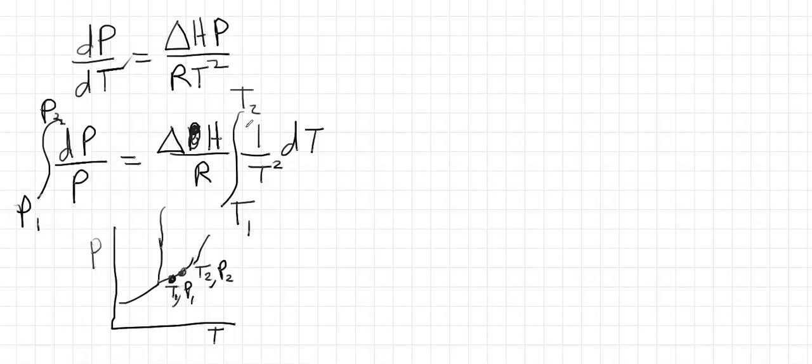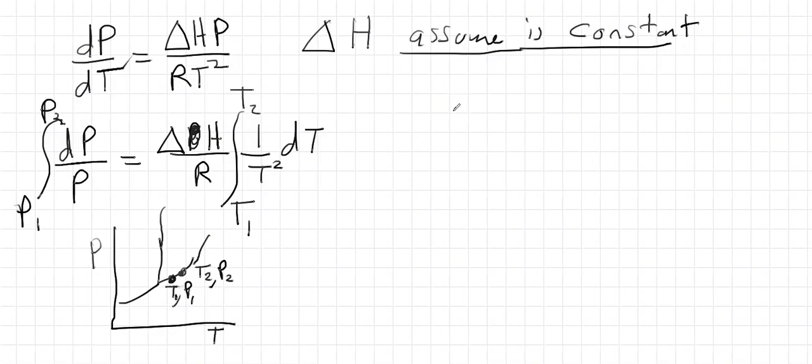Let's go ahead and do the integral. Notice that I've already taken the H out, so we've made an assumption here. Let's explicitly state that we're assuming delta H is constant. If we do this over a really big temperature range, that approximation is going to start to break down. We're assuming the gas is ideal, the molar volume of gas is much more than the molar volume of condensed phase, and now delta H of the transition, whether it's vaporization or sublimation, is constant.